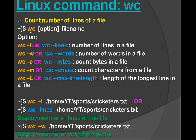The syntax is: wc space option space file name. When we use wc -l or wc --lines, it will count the number of lines in a file. Both of these options are equivalent — wc -l and wc --lines will both give the number of lines in a file.